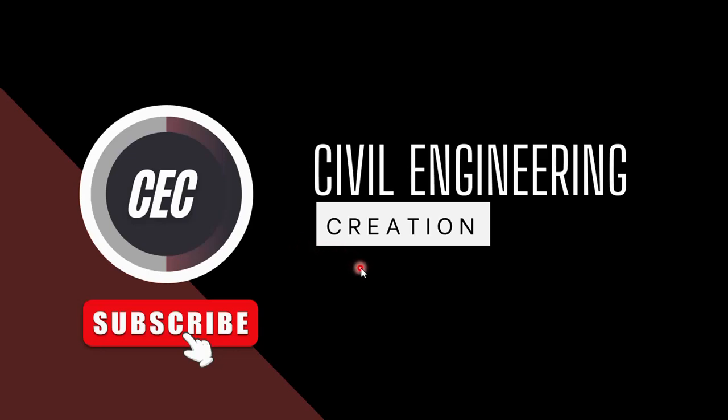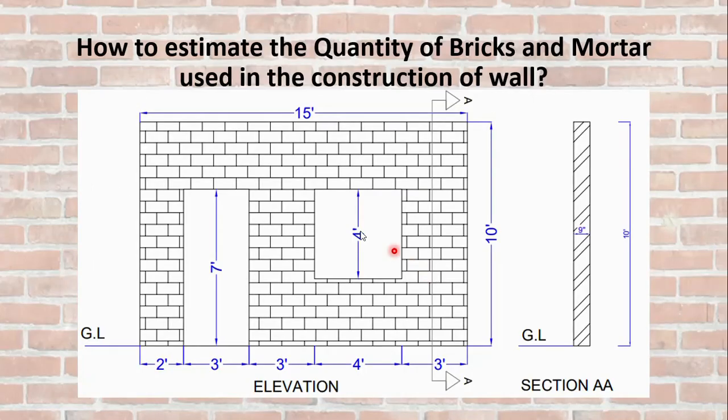Welcome to my YouTube channel Civil Engineering Creation. Today's question is how to estimate the quantity of bricks and mortar used in the construction of a wall. Here you can see a wall with dimension 15 feet length, 10 feet height, and 9 inch thickness with a door and a window.